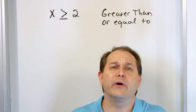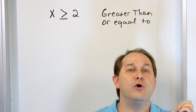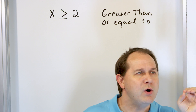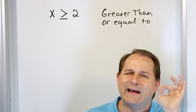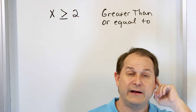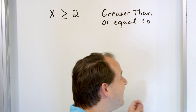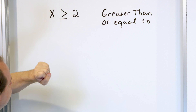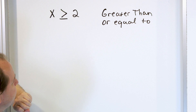For instance, 2.1, 2.0001 — that's just a tiny bit bigger than two, and so it also satisfies this as well. So any number bigger than two, greater than two, or equal to two.